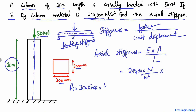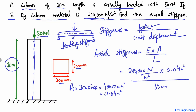200 × 200 gives 40,000 square millimeters. Converting to square meters gives 0.04 square meters. Dividing by the length of 10 meters, from this calculation we get the axial stiffness equal to 800 newton per meter.